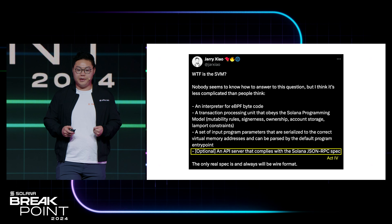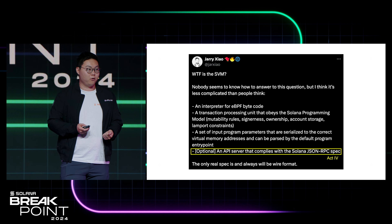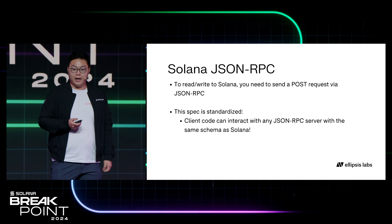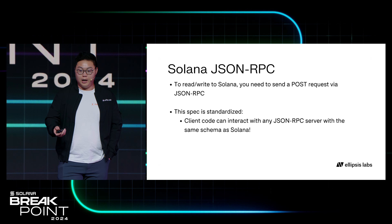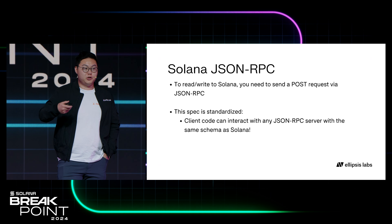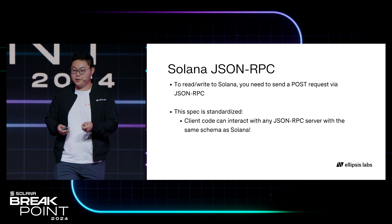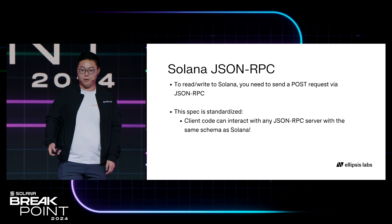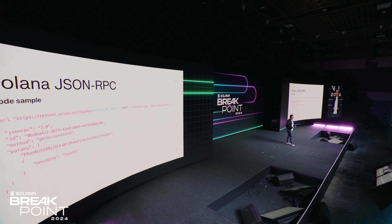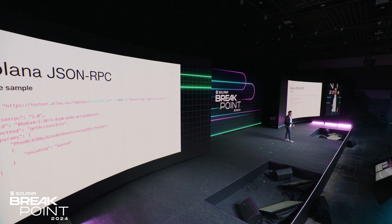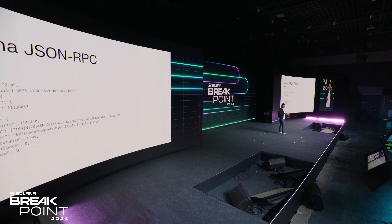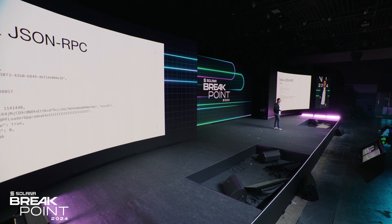Act 4 is about the JSON RPC. I think this is an optional piece of the spec, but a rather important one for practical reasons. It's essentially an API server that you can send POST requests to, and they will return data in a predefined format. This is a very standardized spec, which means that if you implement a JSON RPC server with the expected inputs and output serialization format, any client code that can interact with the Solana JSON RPC can also interact with this custom JSON RPC server. For example, a call to get account info returns data in a standardized format.